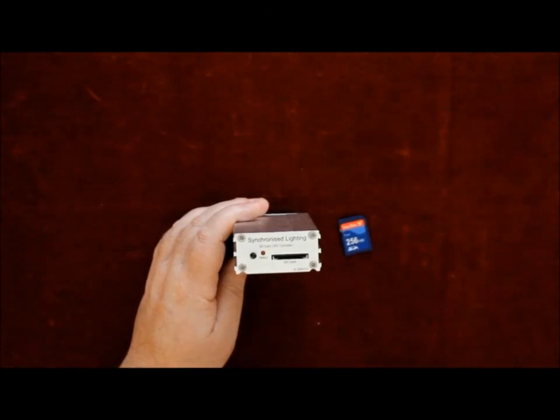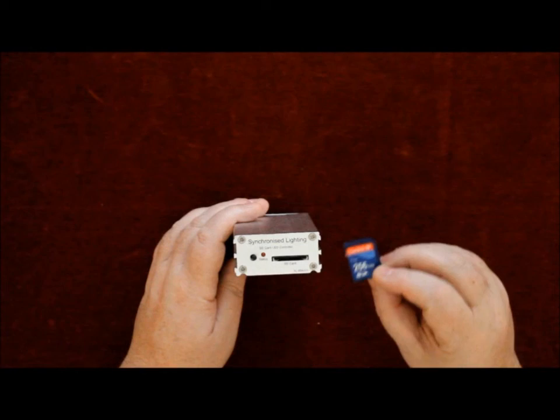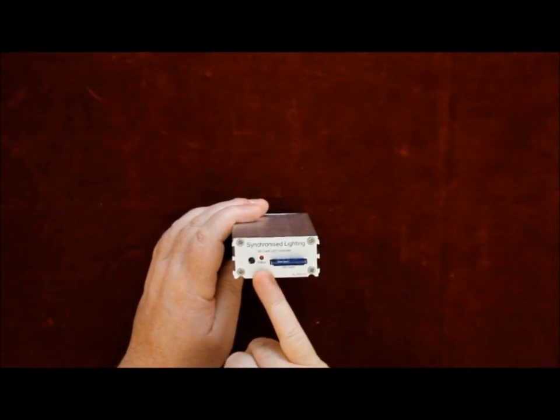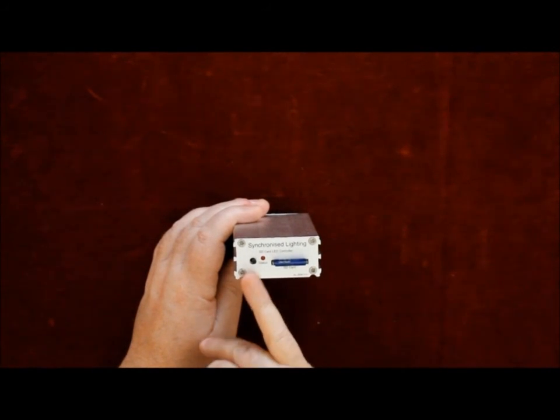This is the front of the SD card controller. The SD card goes into the slot. It also has a LED status symbol and a sequence selector button.